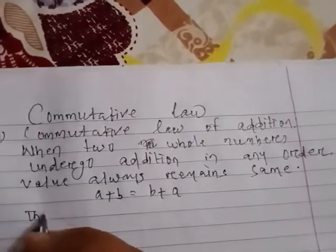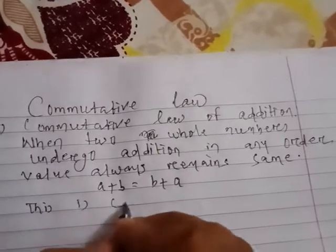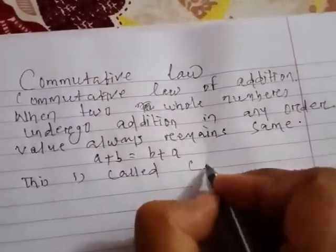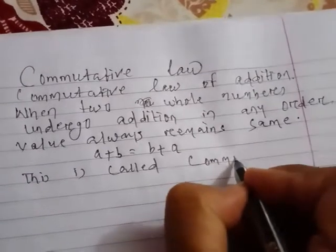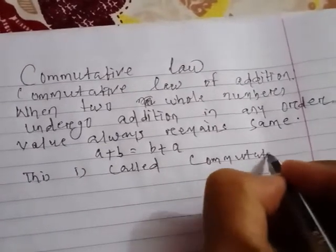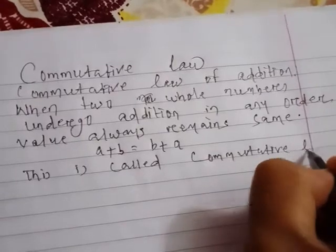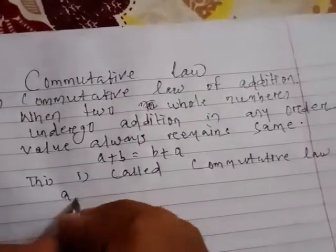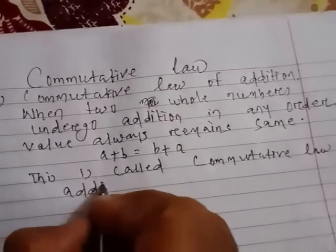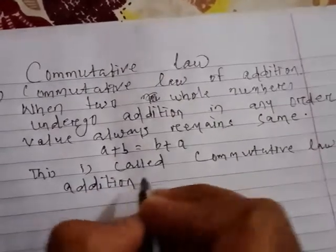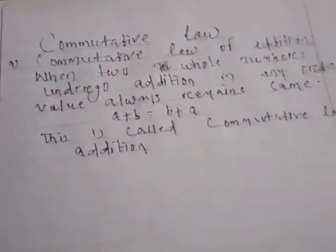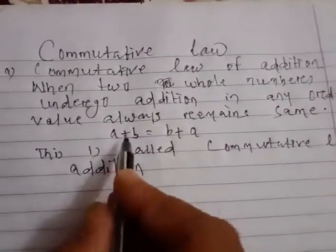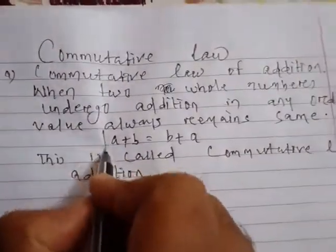This is called the commutative law of addition. It means a plus b is equal to b plus a.